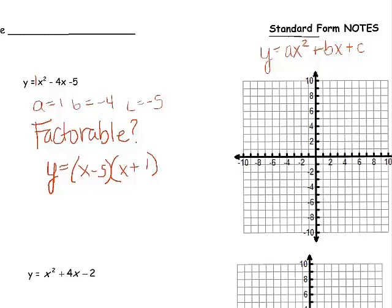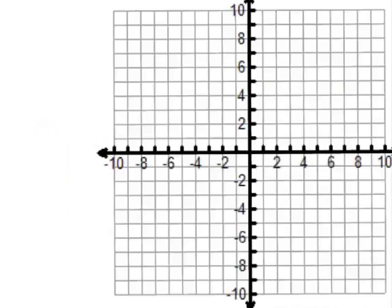Now that it's factored, we can see that there is an x-intercept at (5, 0) and another x-intercept at (-1, 0). I'm going to put those on the graph right now. Here's the (5, 0) and here's the (-1, 0).